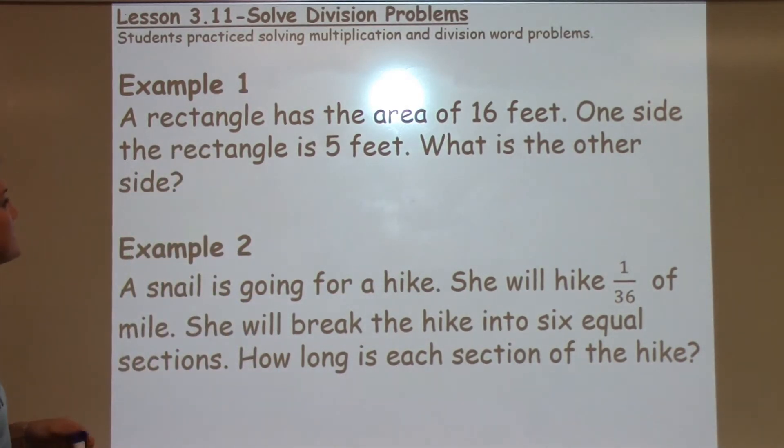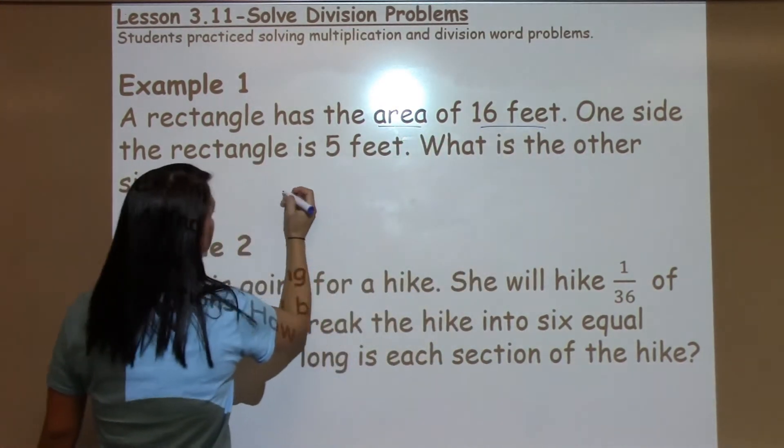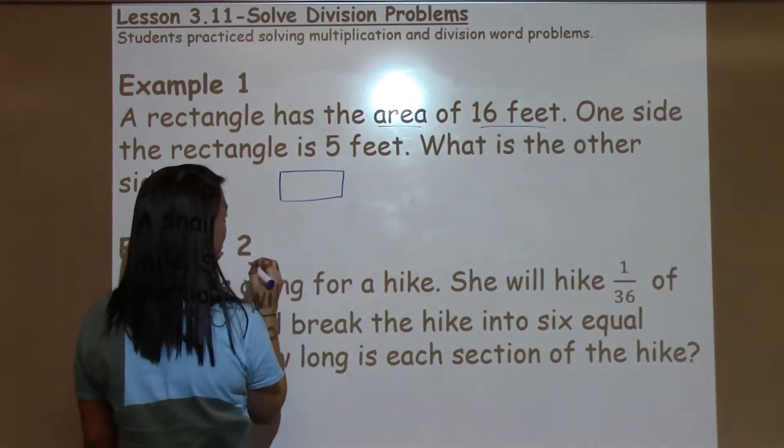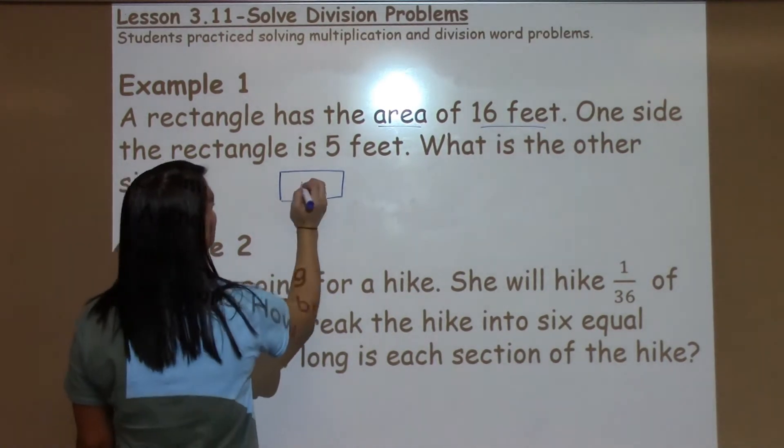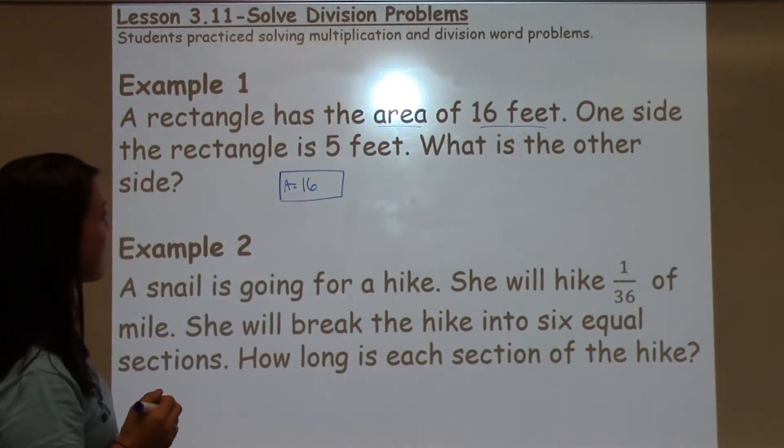So the first example says a rectangle has the area of 16 feet. Anytime that we're working with shapes, I always ask the students to go ahead and draw a quick sketch of the shape and think about the information that they have.